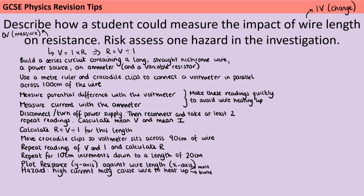In terms of the second part of the question — the risk assessment — the major hazard is that if you have high current, you end up with your wire heating up. It could melt, it could burn you. So in order to lower the risk, we need to keep the temperature low, and therefore we need to keep the current low.